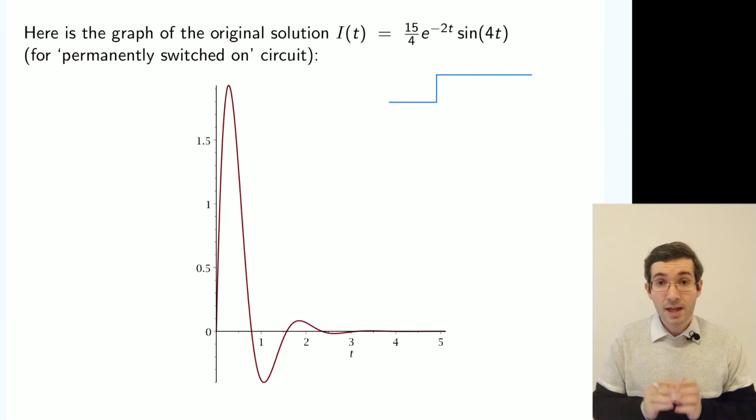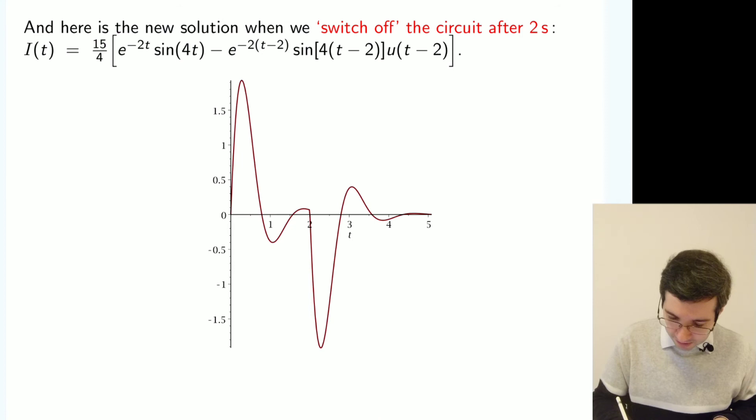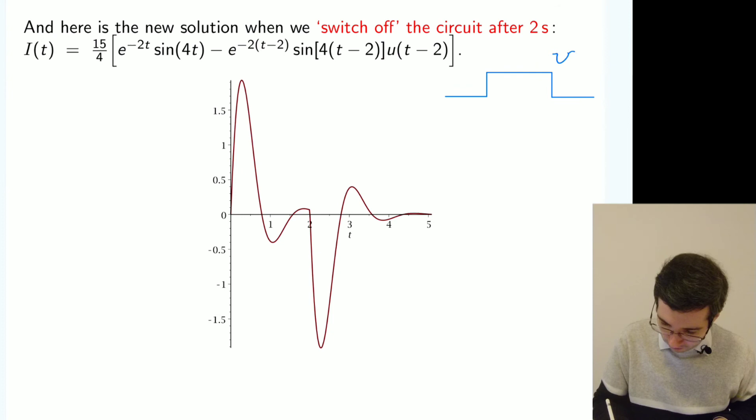Now let's compare it to the solution which we just found, where the current generated by the voltage which was switched on and then switched off. At time equals two.